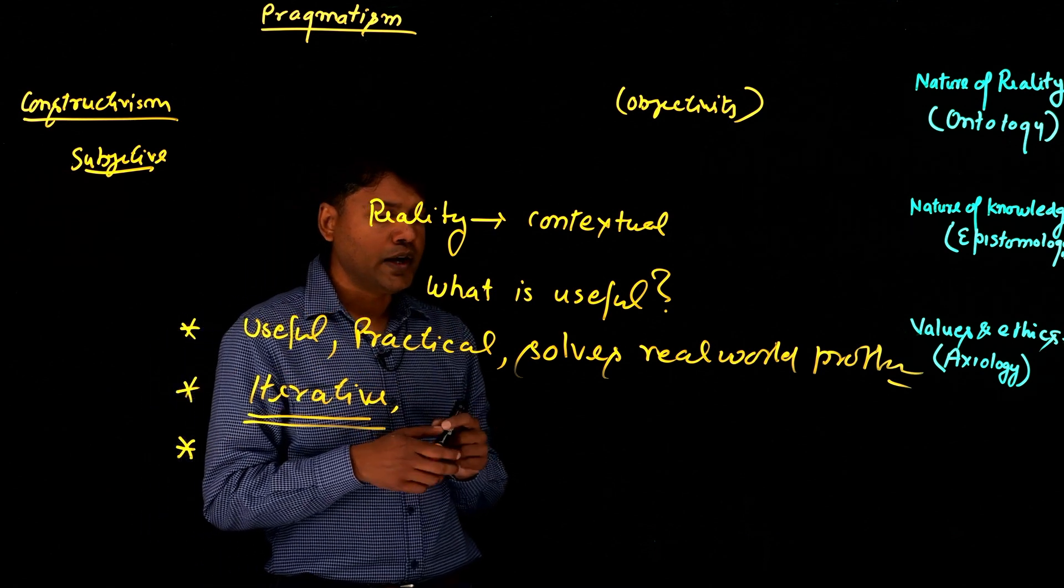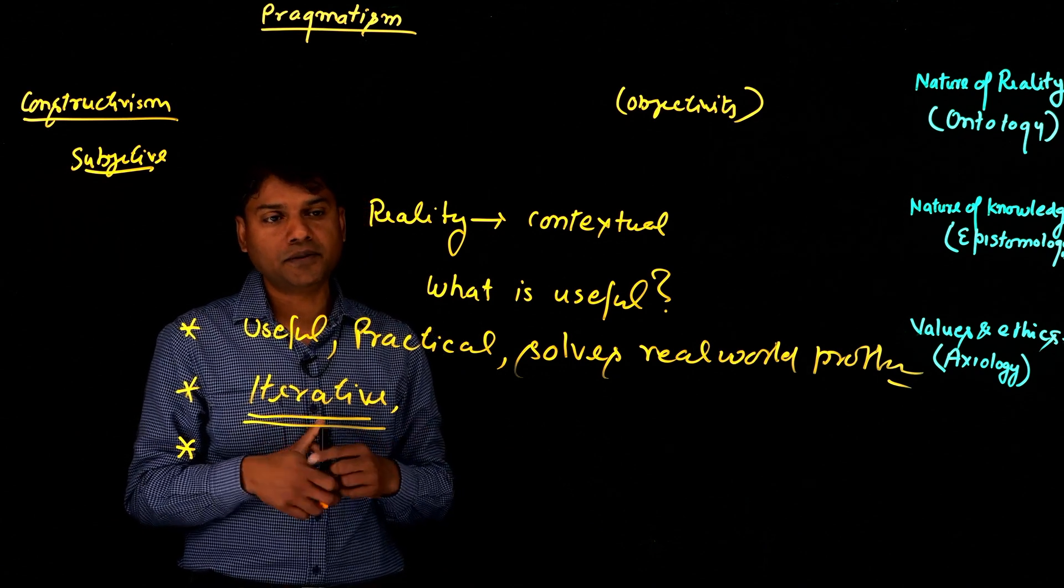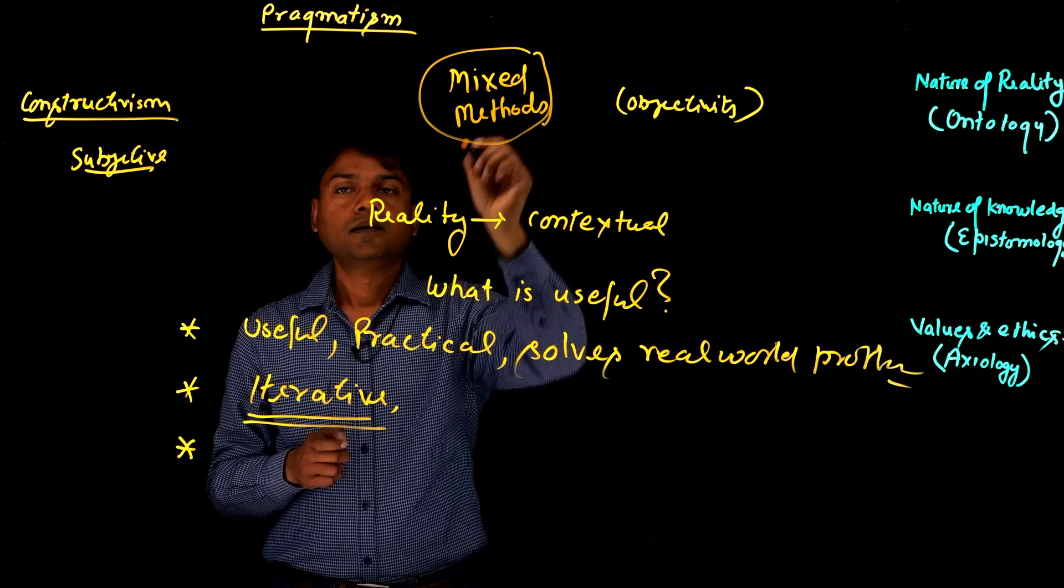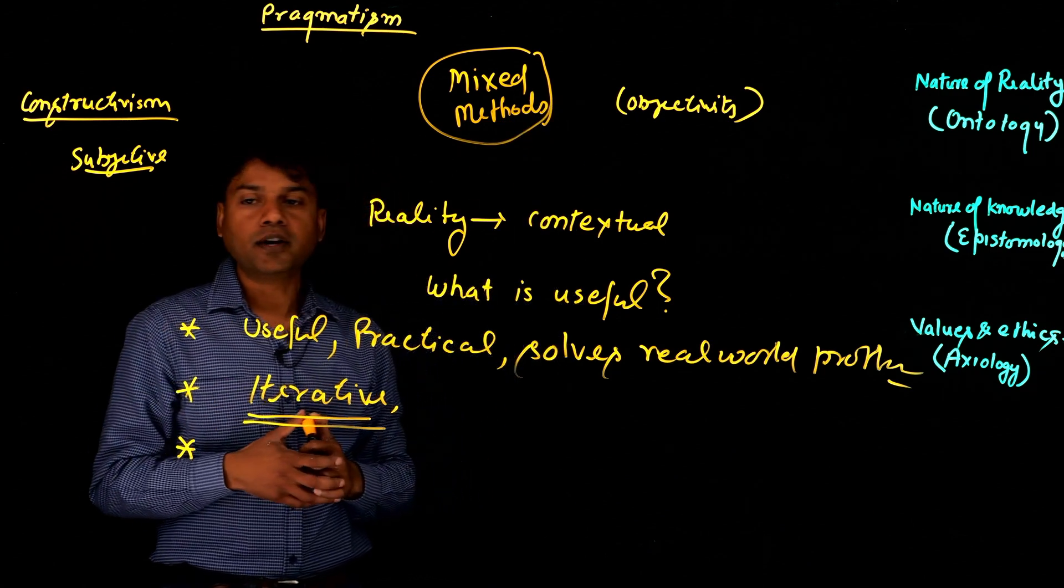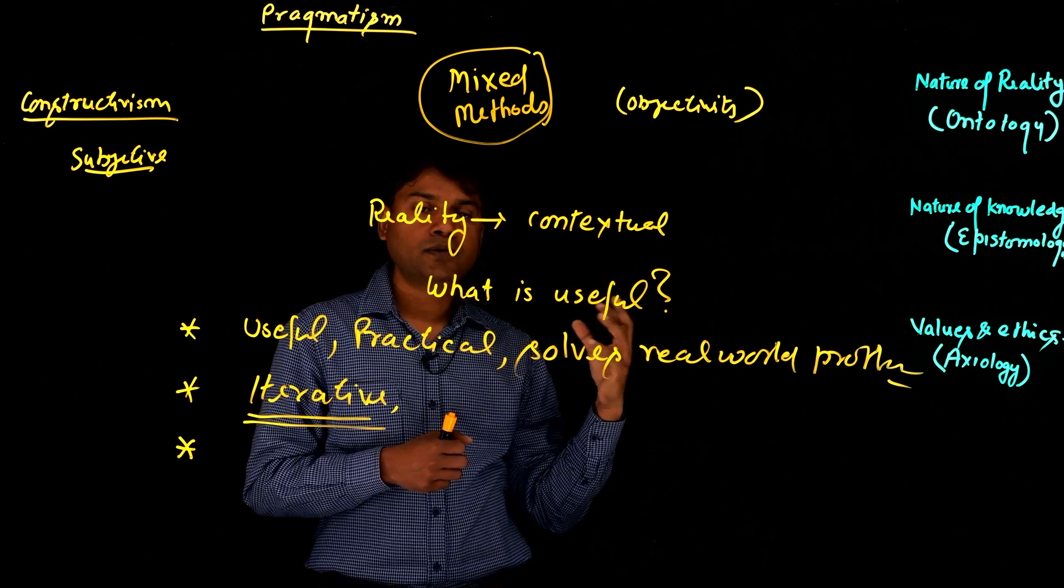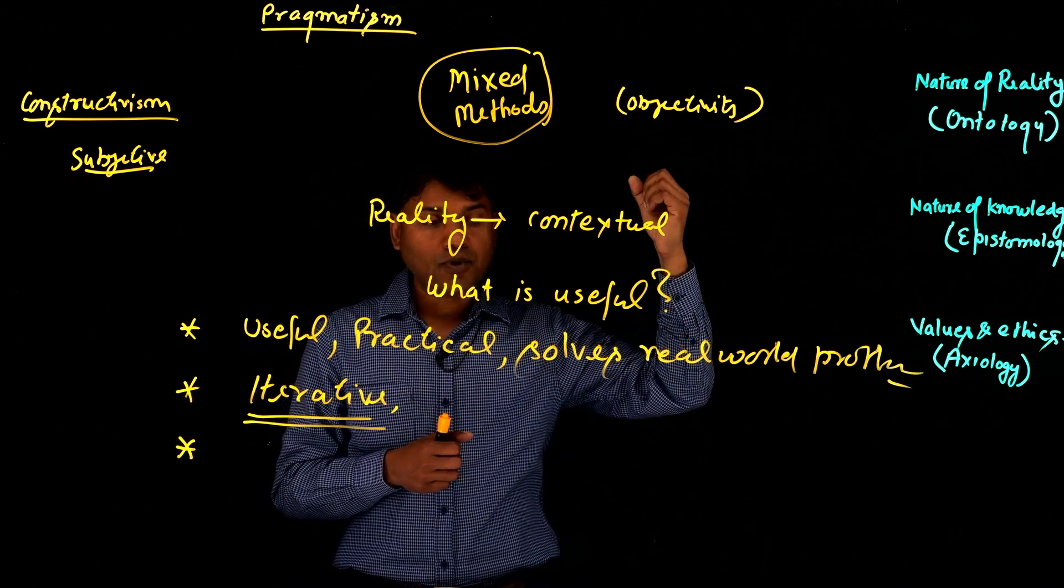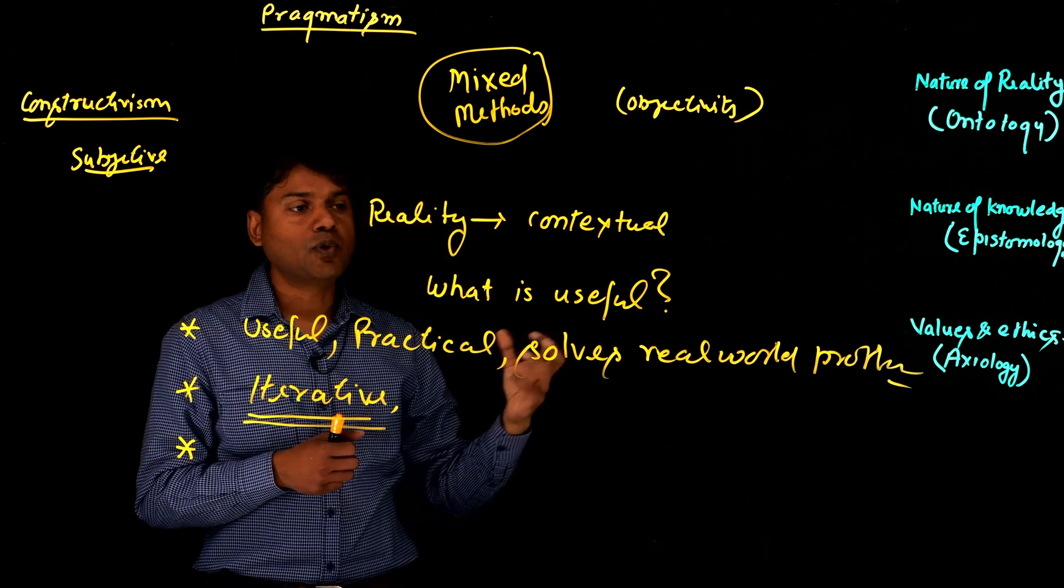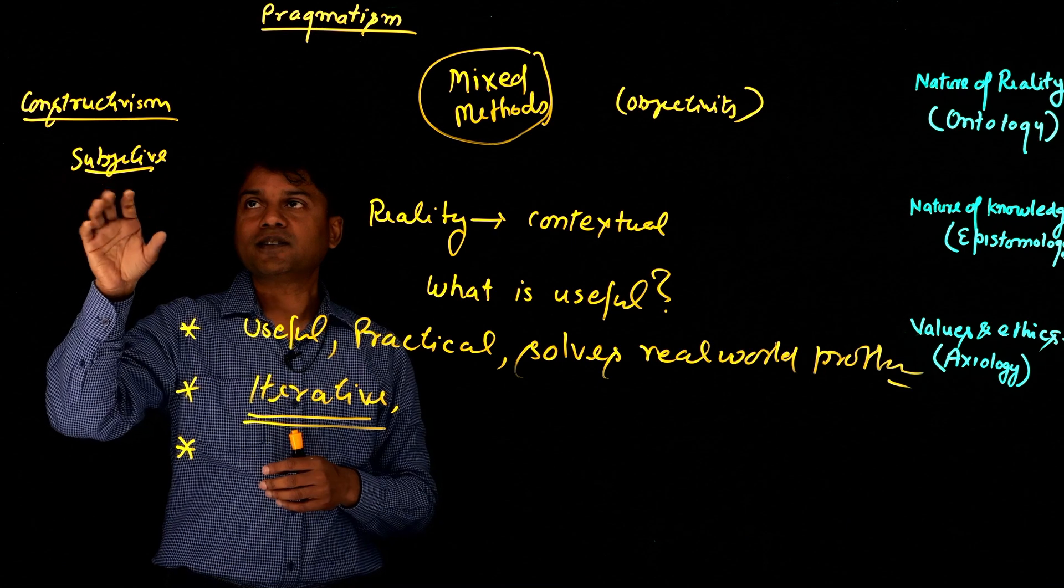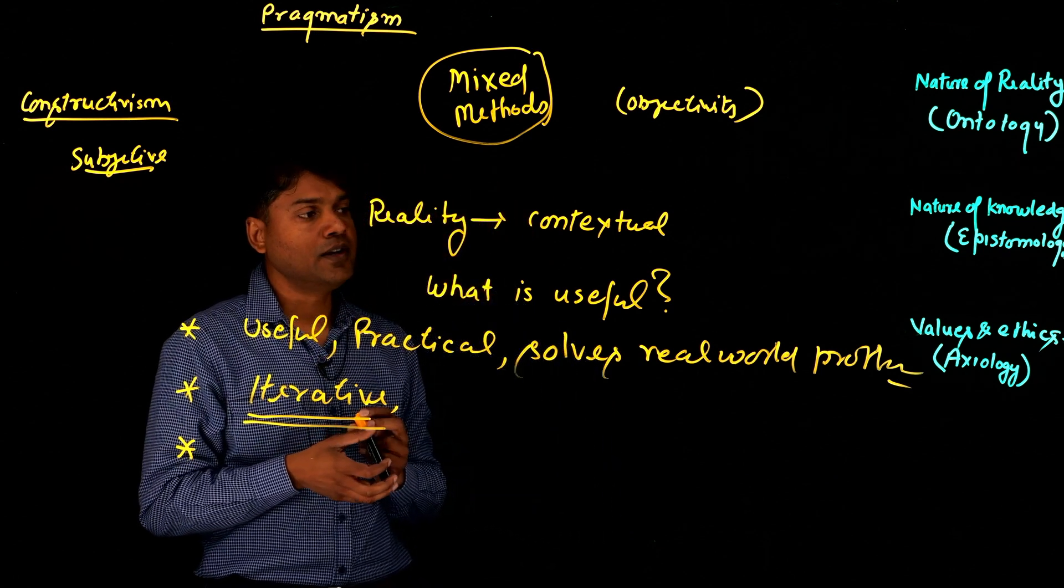And that's why one of the very popular research methods that came out of this pragmatist paradigm, we call it mixed methods. Mixed methods is an approach to conducting research where you as a researcher, depending on the problem, you try out ways of data collection, ways of generating knowledge, which comes from quantitative research, meaning more positivistic or post-positivistic approaches. So you collect some quantitative data. At the same time, in mixed method, you also collect qualitative data, which is again an approach of constructivist paradigm. So mixed method is a popular method, which is used by many researchers to address real world problems and generate new knowledge.